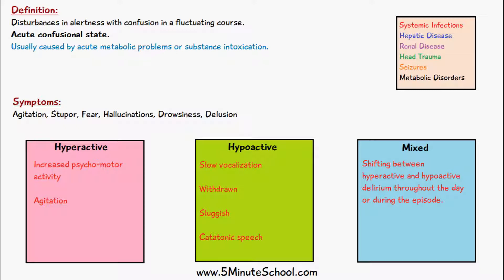With hyperactive delirium, the patient has increased psychomotor activity so they appear very agitated and they may be speaking very fast or moving very fast. In hypoactive delirium we have slow vocalisation.